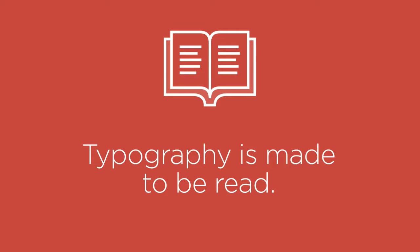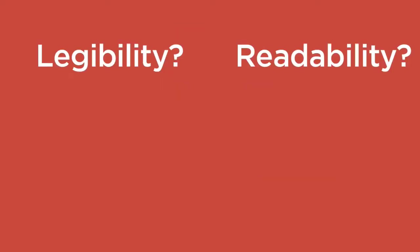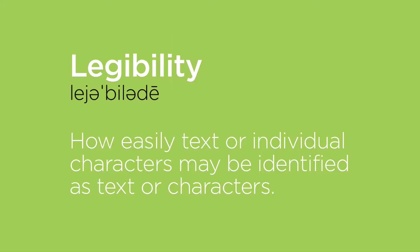Typography is made to be read. It must be legible and readable. Let's define those terms. Legibility is how easily text or individual characters are identified as text or characters — how easily a viewer identifies that the shapes are representations of language, even a language the viewer can't read, as long as the viewer understands these are language representations.